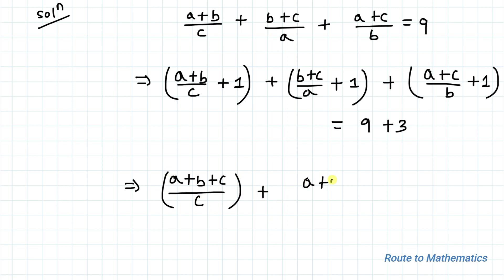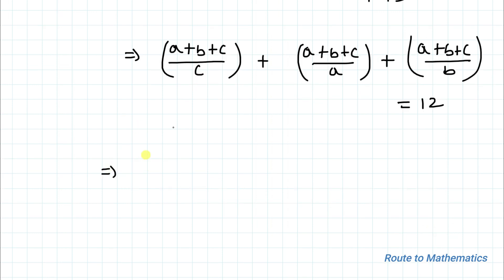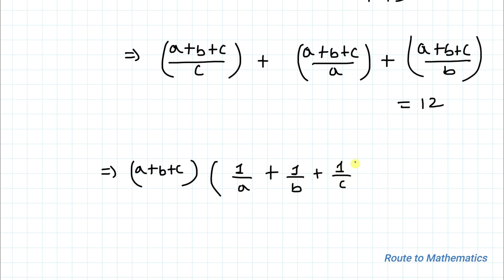Taking LCM and factoring, we get (a+b+c)(1/a + 1/b + 1/c) = 12. Taking (a+b+c) common, this simplifies to (a+b+c) multiplied by (1/a + 1/b + 1/c) = 12.